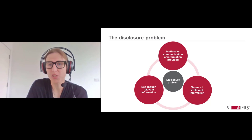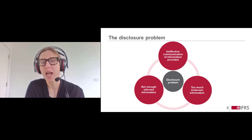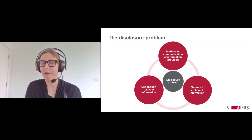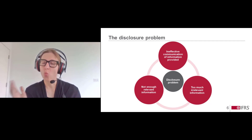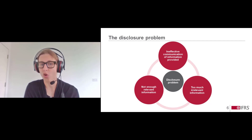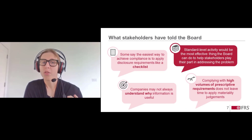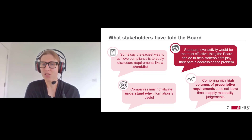Many listeners will know that we've been talking about challenges with disclosures in financial statements for a number of years now. We've heard about financial statements not containing enough relevant information, containing too much irrelevant information, and about ineffective communication of the information that is provided. The board has already undertaken a number of projects focused on specific ways to help solve this problem. One example was making targeted amendments to IAS 1 to make clear that the concept of materiality applies to all disclosure requirements across the standards. However, the problem continues to exist, and so the board has undertaken this project, which really forms its central response to the overall disclosure problem.